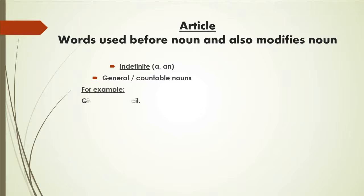For example, give me a pencil. Here give me a pencil, you are asking for any pencil, so it is a for a general purpose and pencil is a countable noun. So give me a pencil is an example of indefinite article.